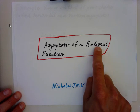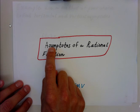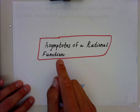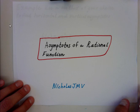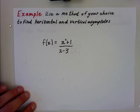Hey everybody, welcome to Asymptotes of Rational Function. I'm going to do a couple of examples here of how to find vertical and horizontal asymptotes. This is Nicholas, JMV. So let's get started with an example here.